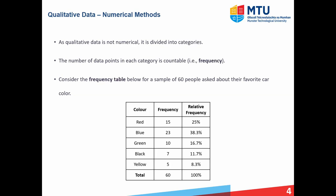We can then calculate things such as the relative frequency, which is the particular frequency in a row divided by the total frequency or the total number of people in your sample. For example, the frequency for the number of people who like red is 15 over the total frequency of 60, which equals 0.25. We can write that as the fraction 1 over 4, or equivalently as a percentage, 25%. We can do that for each category, and the total relative frequency at the end should be 100% or 1.